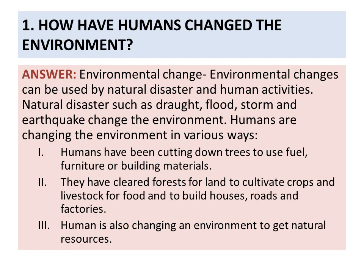How have humans changed the environment? Answer: Environmental changes can be caused by natural disasters such as drought, flood, storm, and earthquake. Humans are changing the environment in various ways. First, humans have been cutting down trees to use as fuel, furniture, or building materials. Second, they have cleared forests for land to cultivate crops and livestock for food, and to build houses, roads, and factories. Third, humans are also changing the environment to get natural resources.